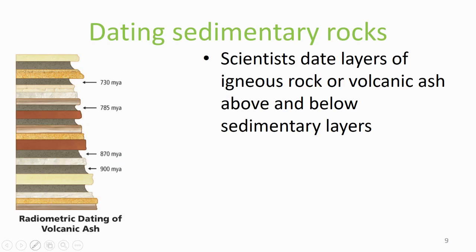When we date sedimentary rocks, we date them using the layers of igneous rock or volcanic ash that are above and below the sedimentary layers. This is because the minerals in most sedimentary rocks were formed from pre-existing rock — their dates prove the ages of the older rocks, but not the age that the sedimentary rock was laid down. That's why we have to date sedimentary rock by dating igneous or volcanic ash layers.